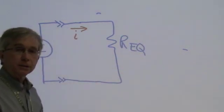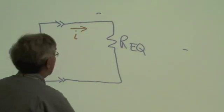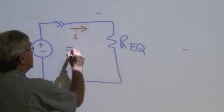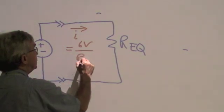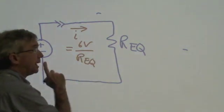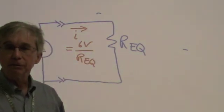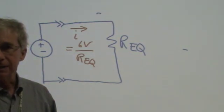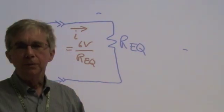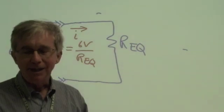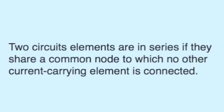such that the resulting current here, I, will be equal to six volts divided by R equivalent, and that I will be the same as for the original circuit. Well, the answer is definitely yes, and we will see the ideas behind that in this lesson.